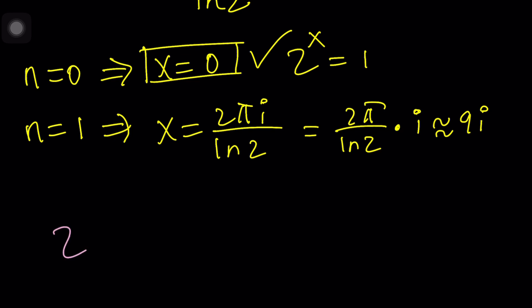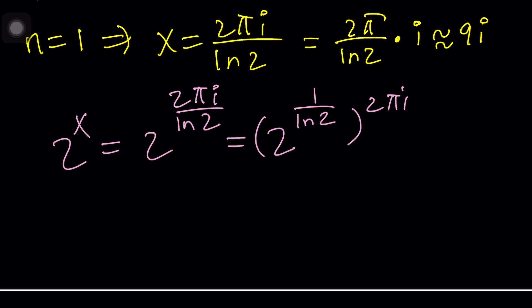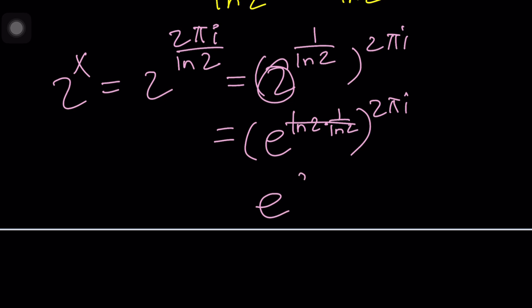So we're going to replace x with 2 pi i over ln 2. You can use the general form 2 pi ni, no big deal. But here we're going to write this as 2 to the power of 1 over ln 2 to the power 2 pi i. And now 2 to the power of 1 over ln 2, you might want to write the 2 as e to the power ln 2, and that will be multiplied by 1 over ln 2, which is going to give us e. And then we will get e to the power 2 pi i, which is equal to 1.